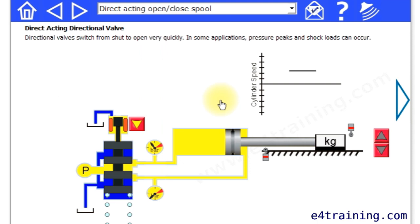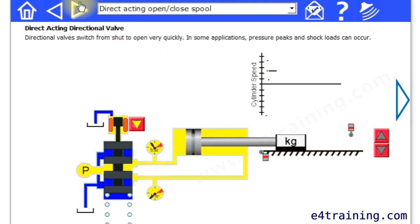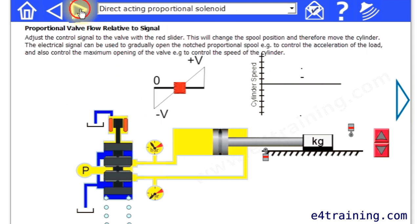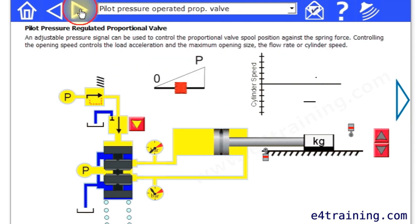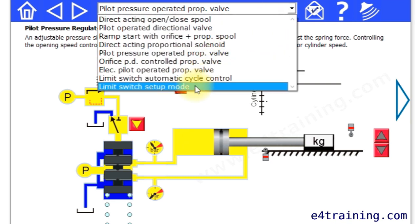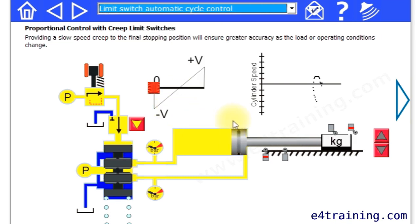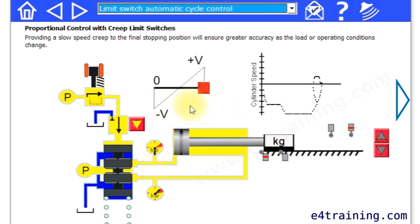We've also got a proportional valve system. It's quite nice to cover some of the different variations you can get with these valves. And we've also got an automatic sequence, so it shows you how the valves move.